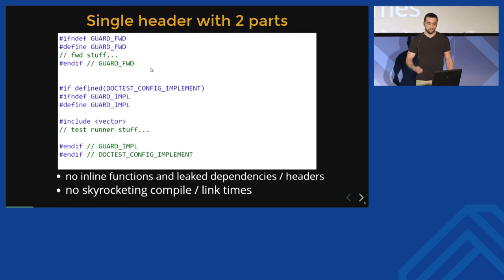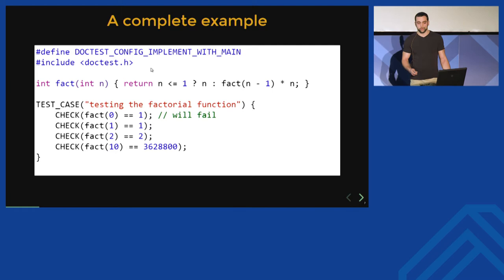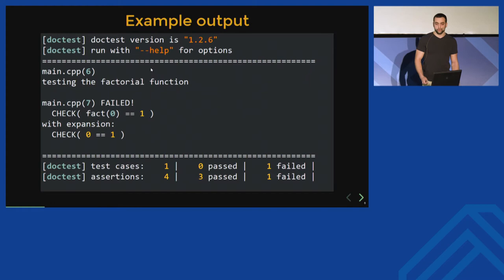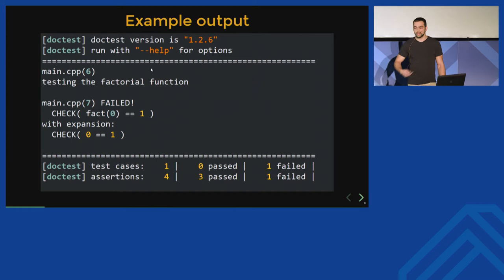Here is a complete example of a program which compiles and links. First, we tell Doctest to bring in the test runner and provide a main entry point. Then we include the framework header. Then we have a factorial function we're going to test. After that, there is a self-registering test case which has four assertions, and the first one will fail because we have a bug. Here is the output: first, we get told which test case failed, then which assertion, where it was located, and we get the result of factorial of zero. So we don't have to rerun the tests to see what value the function returned. At the end, we get a summary of how many test cases and assertions have passed and failed.